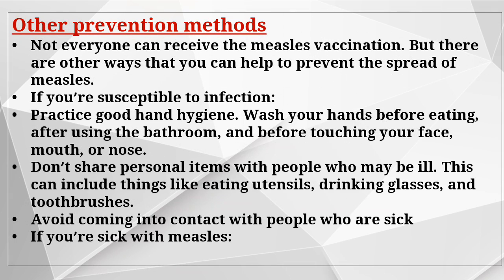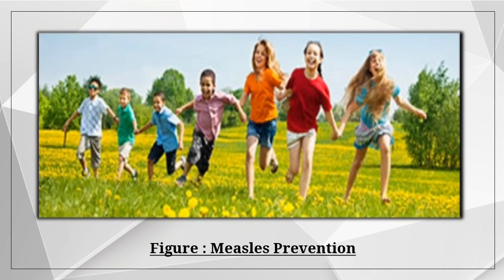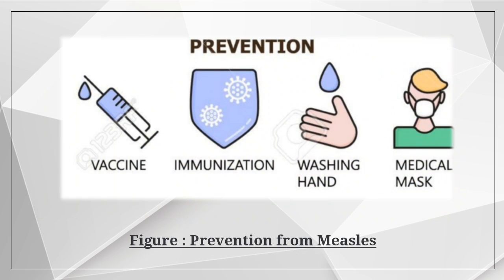Not everyone can receive the measles vaccination, but there are other ways to help prevent the spread of measles. If you are susceptible to infection, practice good hand hygiene: wash your hands before eating, after using the bathroom, and before touching your face, mouth, or nose. Don't share personal items like eating utensils, drinking glasses, or toothbrushes with people who may be ill. Avoid coming into contact with people who are sick. Prevention methods include vaccine, immunization, washing hands, and wearing a medical mask.